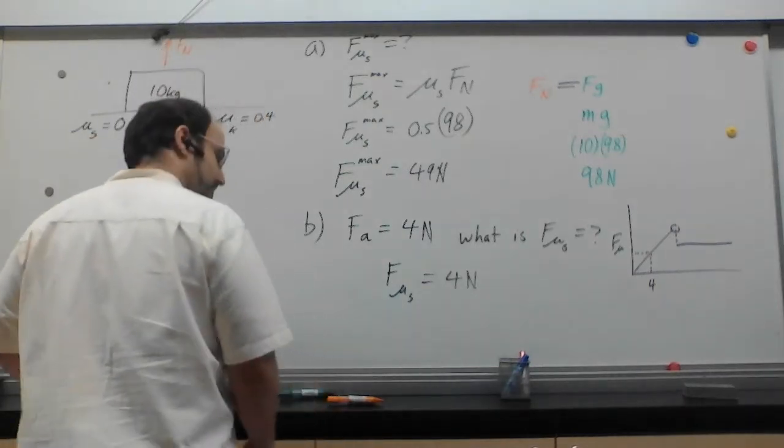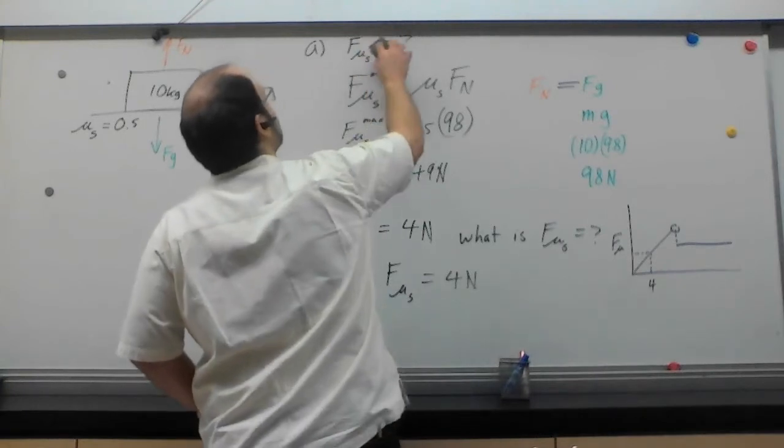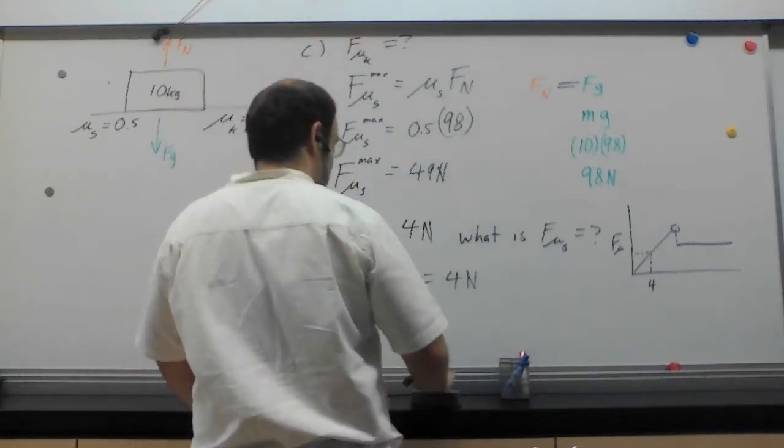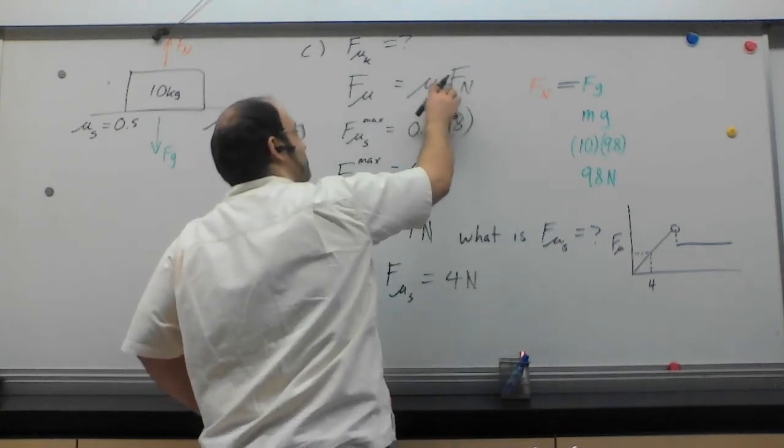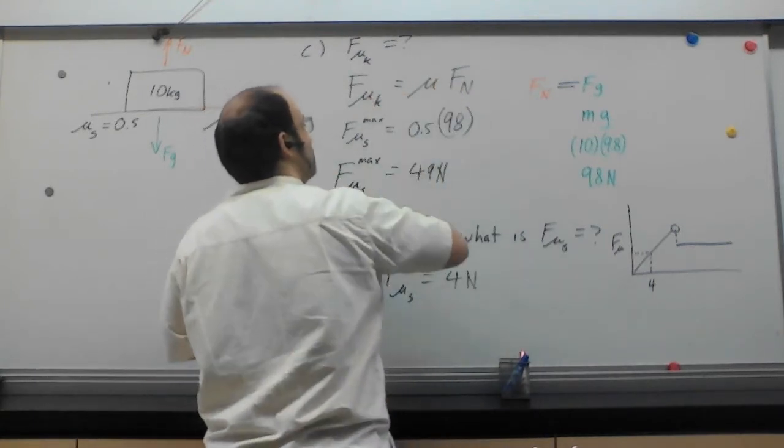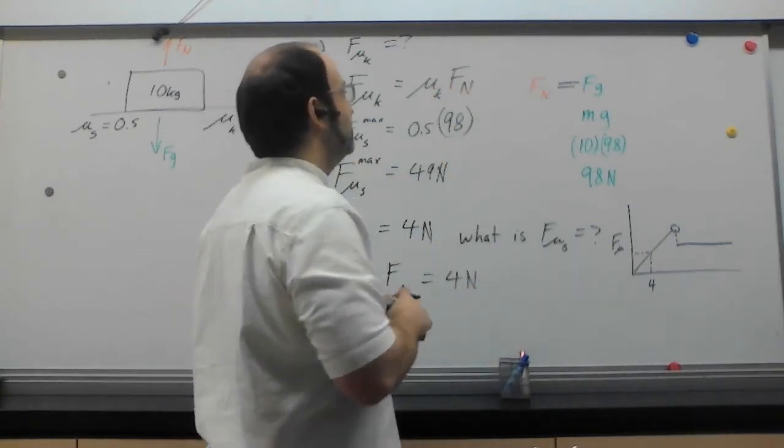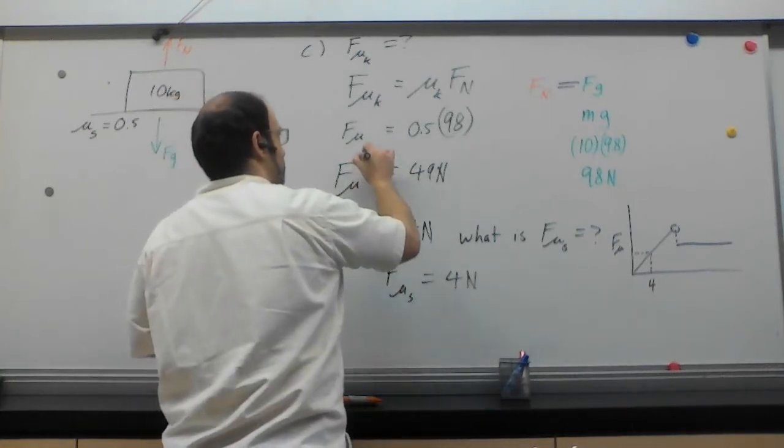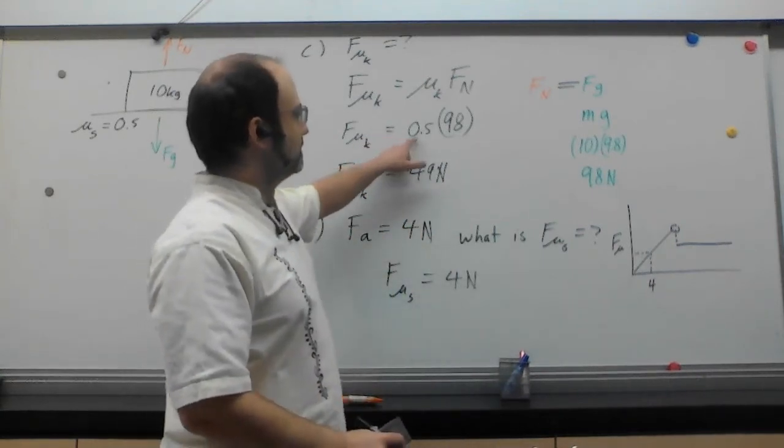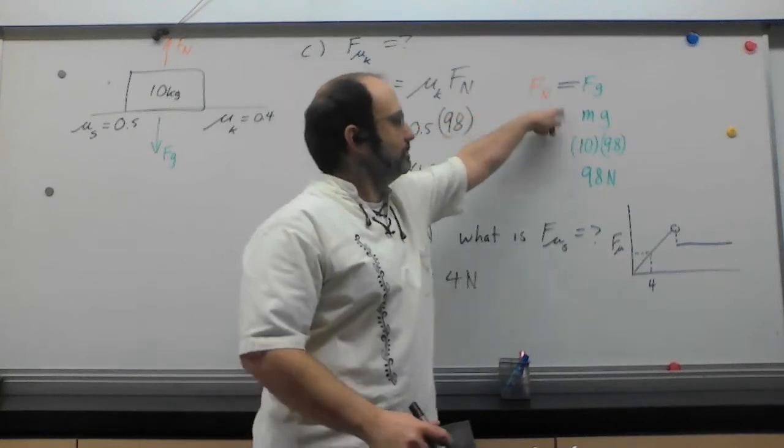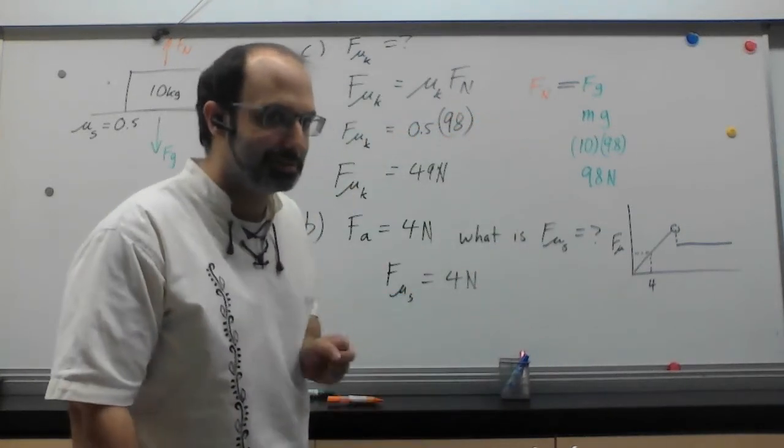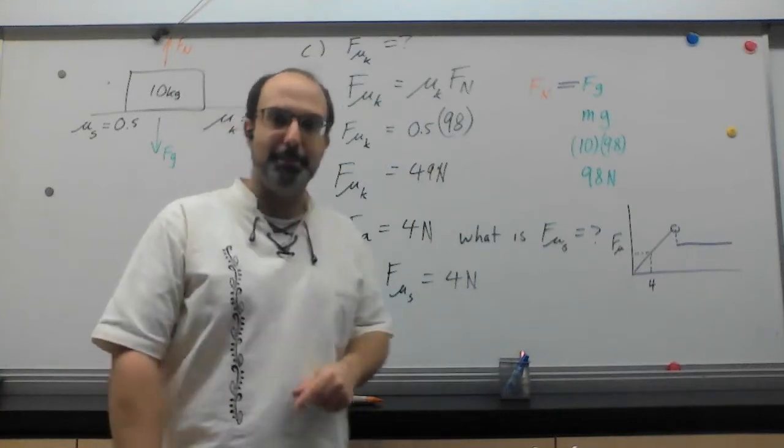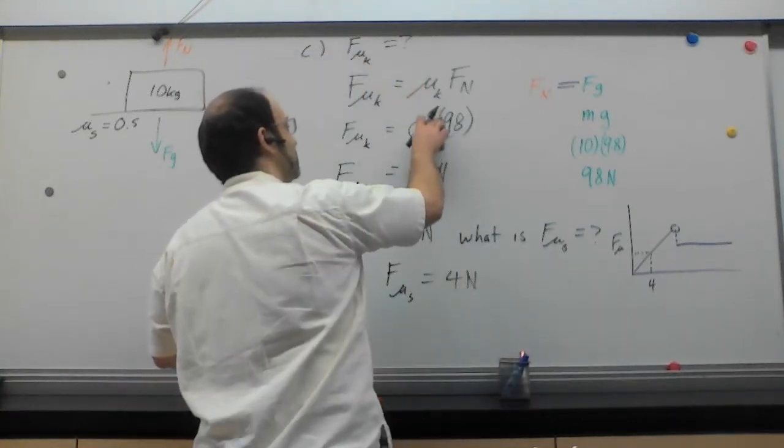Question C. What is the kinetic force of friction? Well, there's a reason I didn't erase too much here. This is very easy to adjust because the two equations have the same basic structure. The difference is only in the details. You'll notice the 98 here, the force normal? Well, that's going to be the same. Just because I'm moving doesn't mean gravity suddenly changes. So this is still 98. This is no longer 0.5 though. Now it is 0.4. So that is really the only change here.